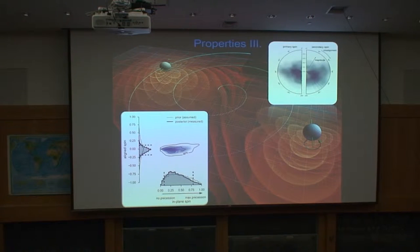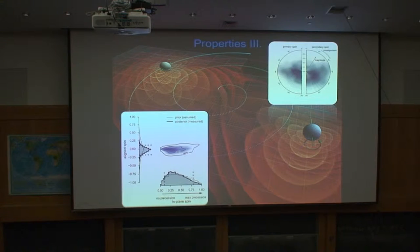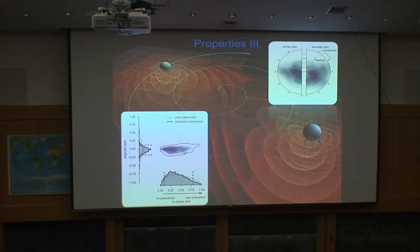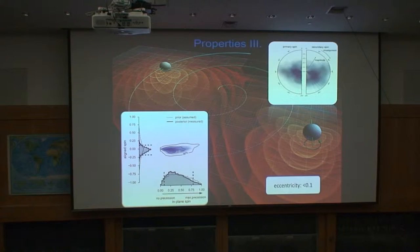We limit this spin to roughly 0.2 in the direction up or down. This is a fairly strict limit on the spin, which already tells us something about where these black holes may have not been created, for example.